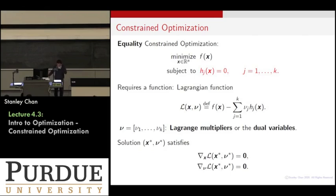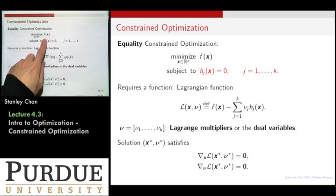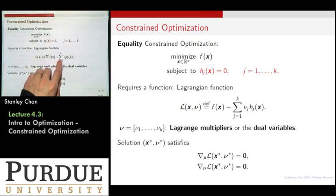So how do we solve this problem? Well, the typical strategy is to form a thing called a Lagrangian function. The Lagrangian function is defined as putting an f, your objective function, and then subtract the summation of all the nu's, this is called a nu, nu will be a scalar, and you have k of them, times your constraint function.